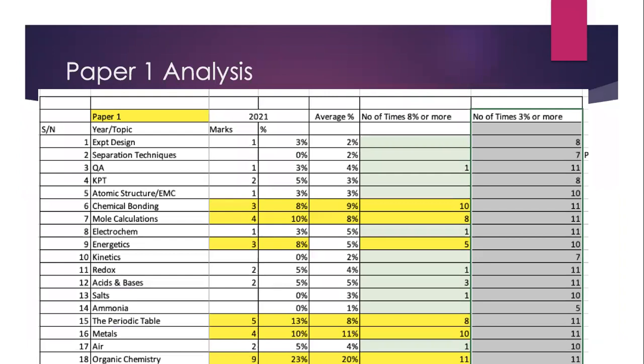Before I prepared these slides, I compiled the list of topics tested from 2011 to 2021. There are about 18 relevant topics tested for the GCO level chemistry paper, from experiment design — which covers measuring instruments, collection of gas and drying of gas — through to organic chemistry.